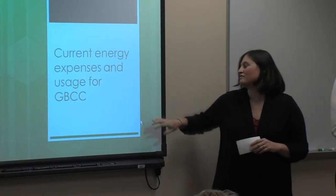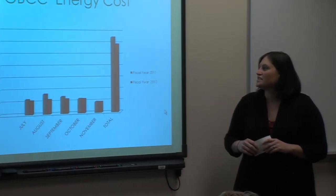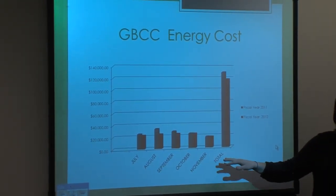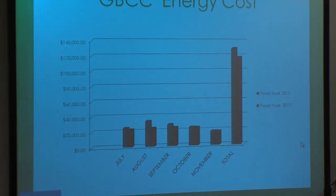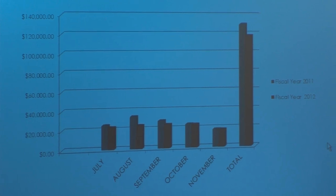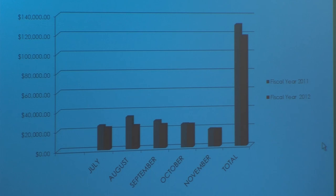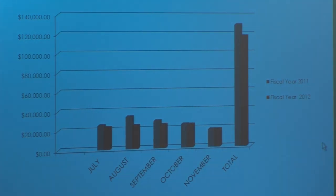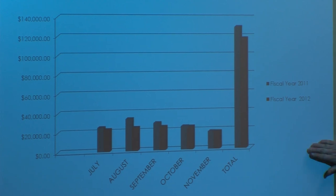Current energy expenses and uses of Great Bay Community College. This is the chart of the energy costs, and we ended up doing July through November because the project started in July — we only wanted to compare apples to apples. Our fiscal year goes from July 1st to June 30th. In July, August, and September of fiscal year 2011, there was an issue with the cooling unit, so the numbers are skewed — a little bit higher in the blue. Due to the cooling unit issue, there was more energy used, which caused the cost to rise.